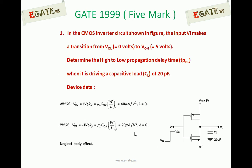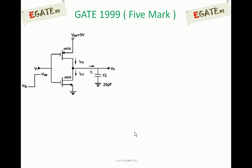We need to calculate the high-to-low propagation delay time TPHL. First we should understand what TPHL means, then proceed to calculate it. This is a 5-mark question, so no options are given. The CMOS inverter circuit consists of two networks: a pull-down network made of NMOS transistors and a pull-up network made of a PMOS transistor. Since both transistors are in series, we expect the same current to flow when they are in the ON condition.